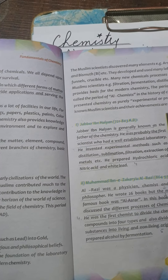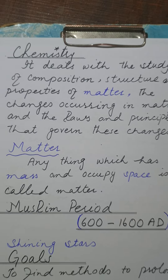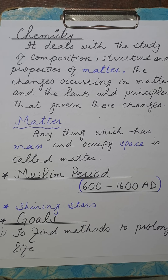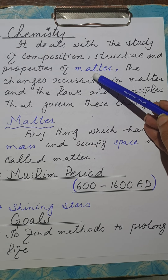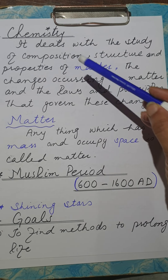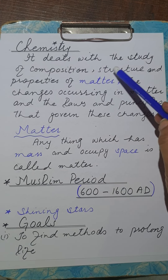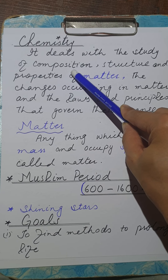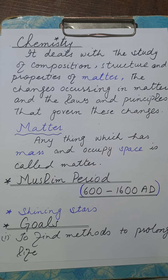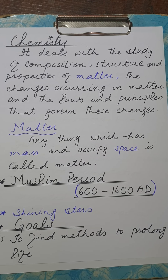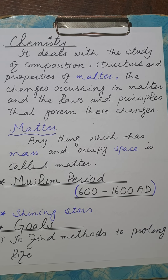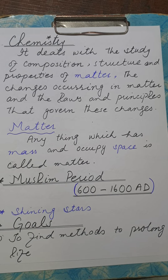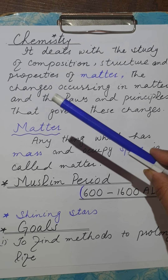The most important thing we will discuss today is: what is chemistry? First of all, it is the branch of science which deals with the study of matter. Chemistry deals with the study of composition — composition means the components which are present in the matter. Different things in the universe have different compositions.